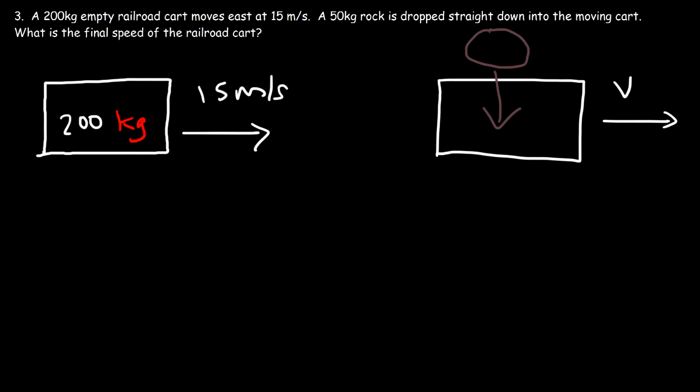Let's discuss what's happening here. As soon as the rock falls into the cart, the rock's speed in the x direction goes from 0 to 12 — so the rock accelerated in the x direction. The railroad cart exerts a horizontal force on the rock, causing it to accelerate from 0 to 12. Based on Newton's third law, for every action force there is an equal and opposite reaction force, so the rock exerts a force back on the cart, slowing it from 15 to 12 meters per second.